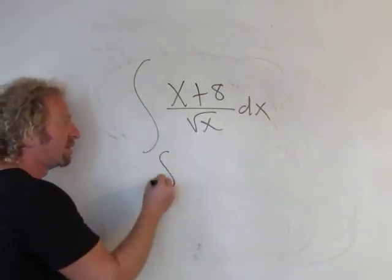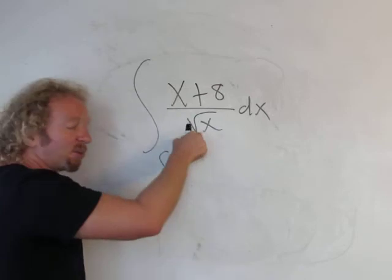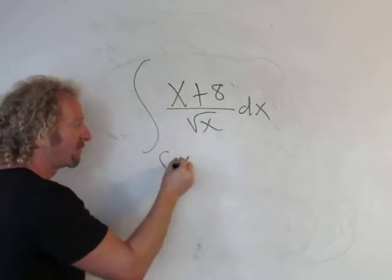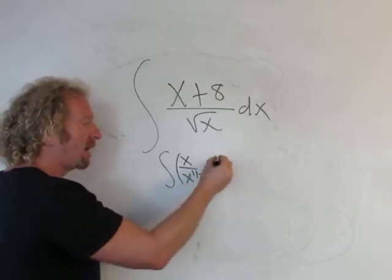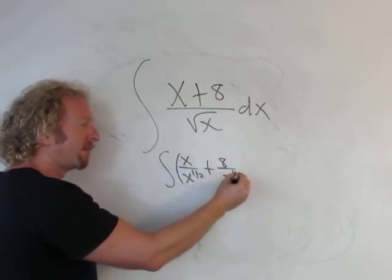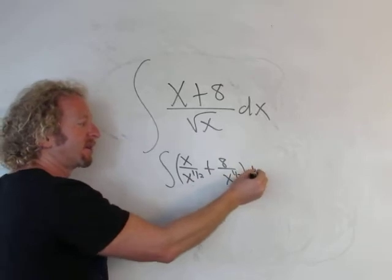So let's do it. You have x over the square root of x, and we can write the square root of x as x to the 1/2. Don't forget the integral sign, really important to write it. Plus, and then 8 over x to the 1/2, and then dx.